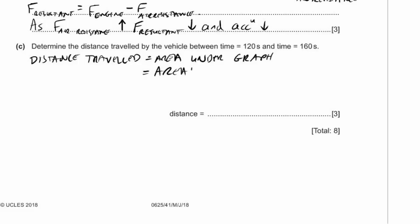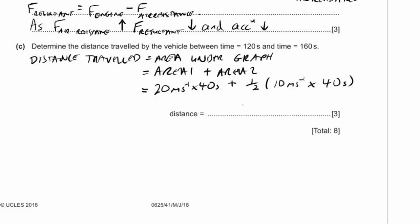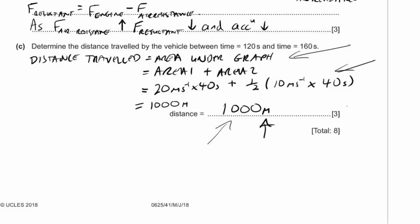Area 1 is a triangle: half times base times height — half of 10 metres per second times 40 seconds. Area 2 is a rectangle: base times height — 20 metres per second times 40 seconds. Distance travelled equals Area 1 plus Area 2, which is 20 × 40 plus half × 10 × 40, giving us an answer of 1000 metres. Make sure to put in the units — explanation, calculation, answer, and units.